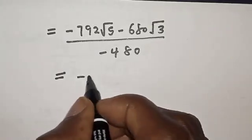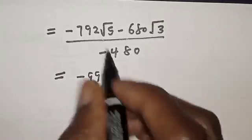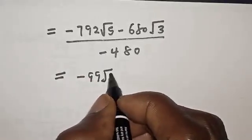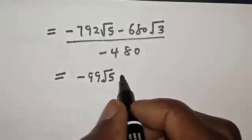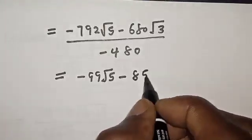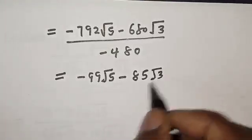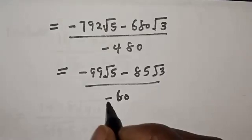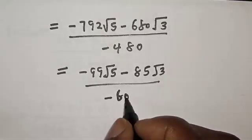So if you divide by 8, 792 divided by 8 gives us minus 99 root 5, and 680 divided by 8 gives us minus 85 root 3, over minus 60.